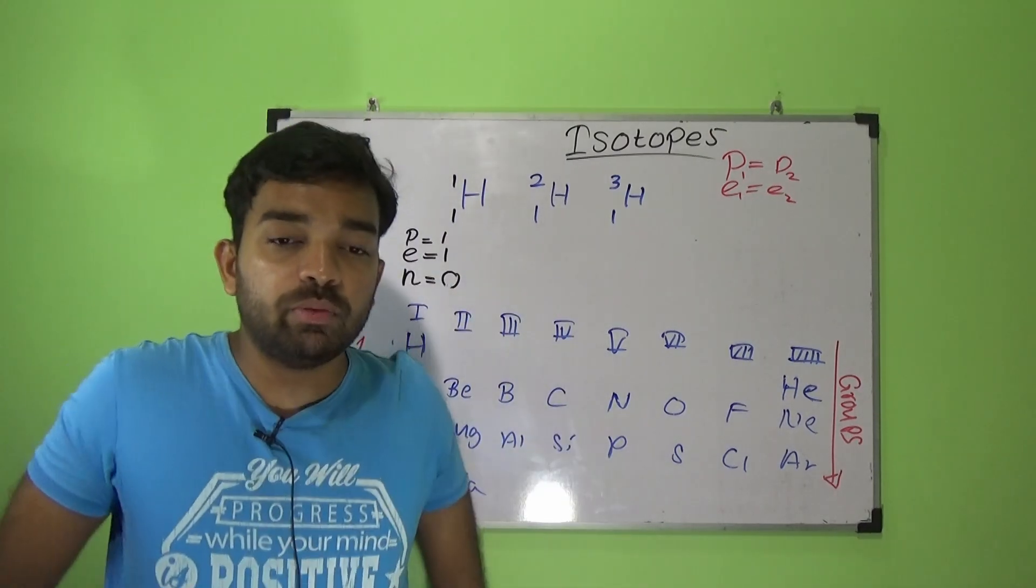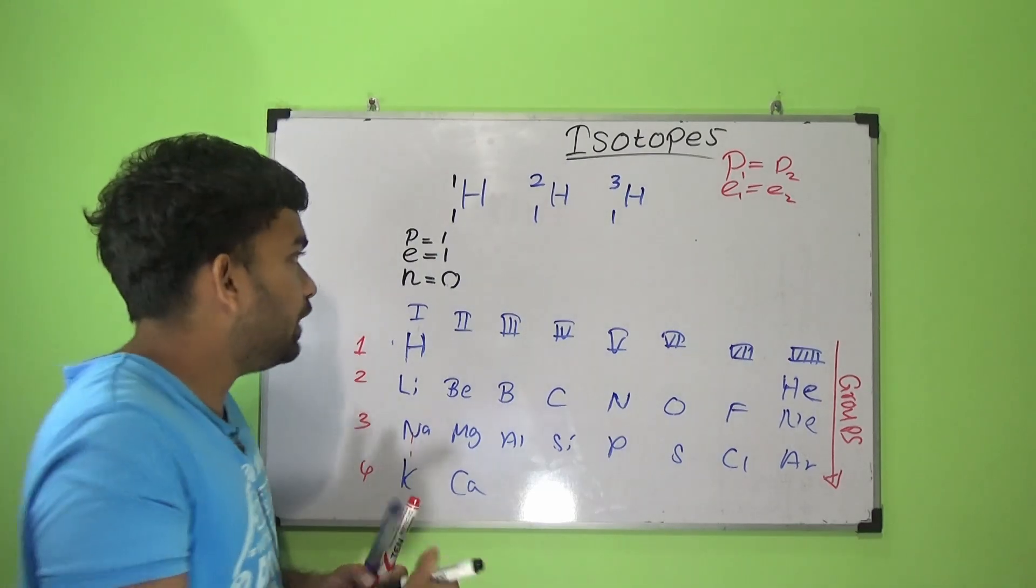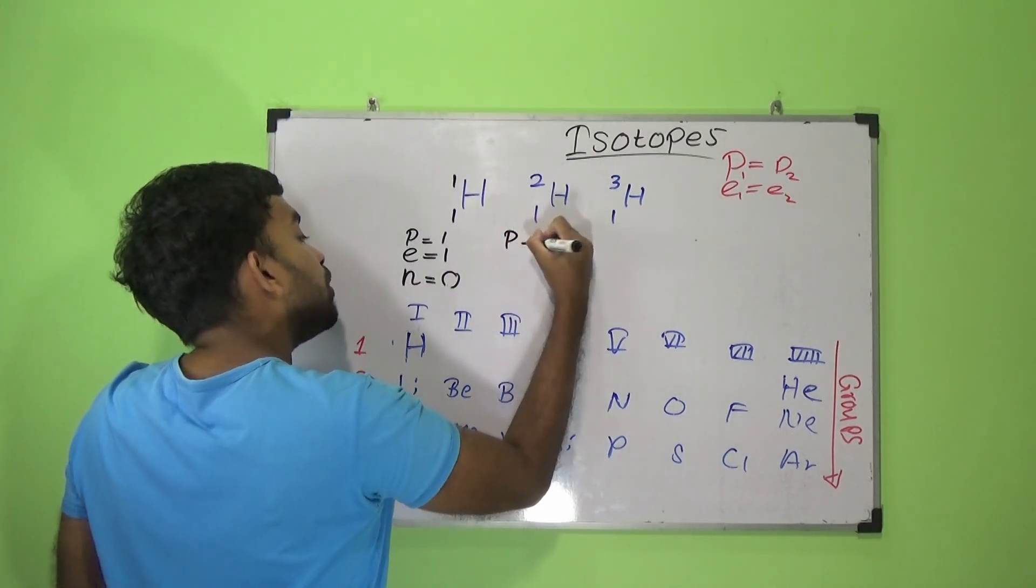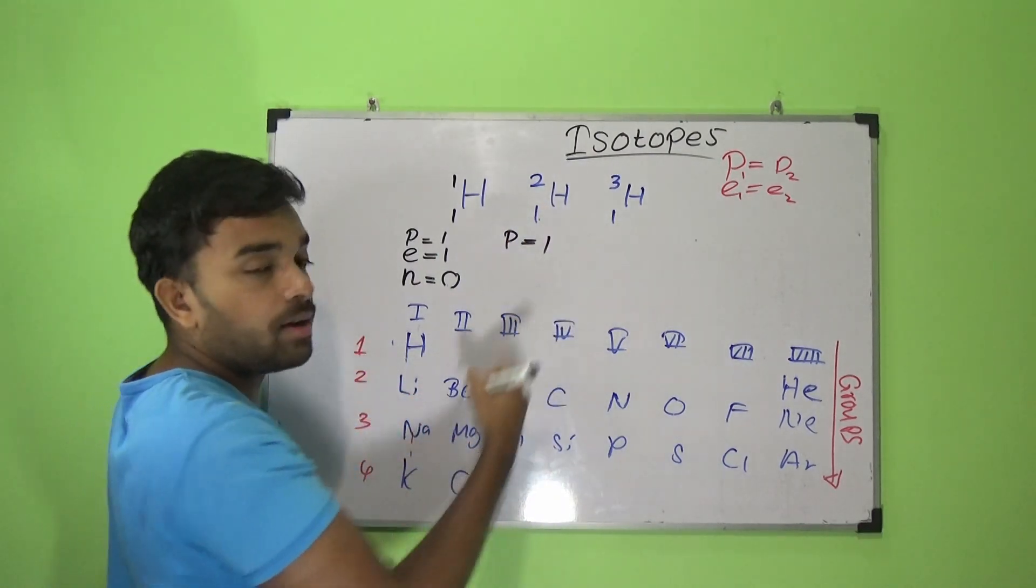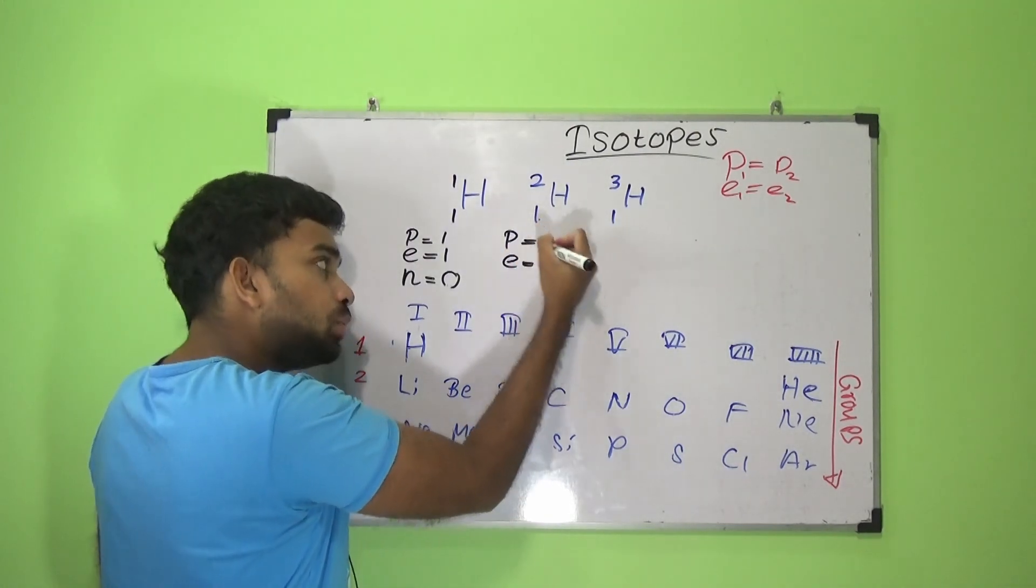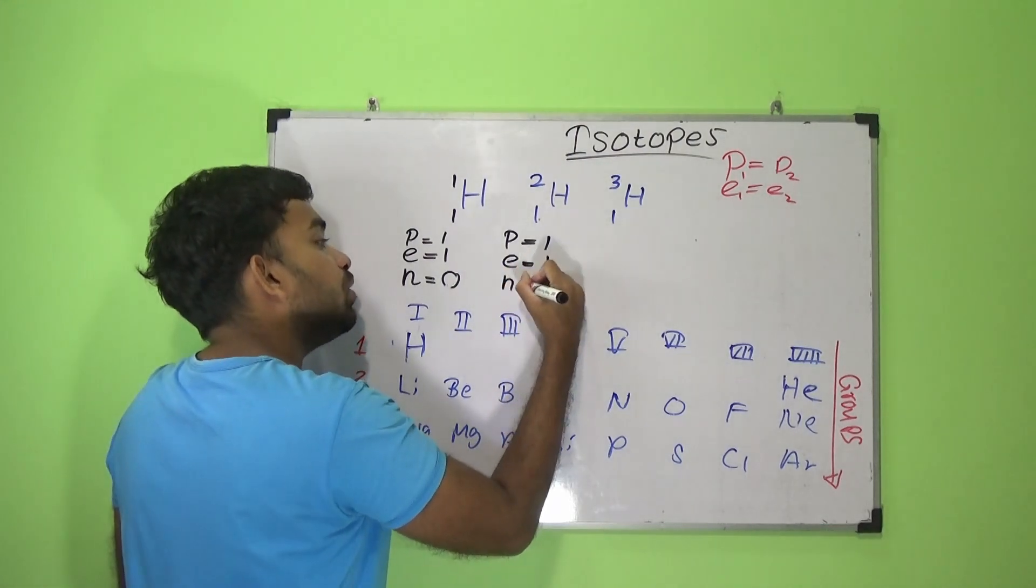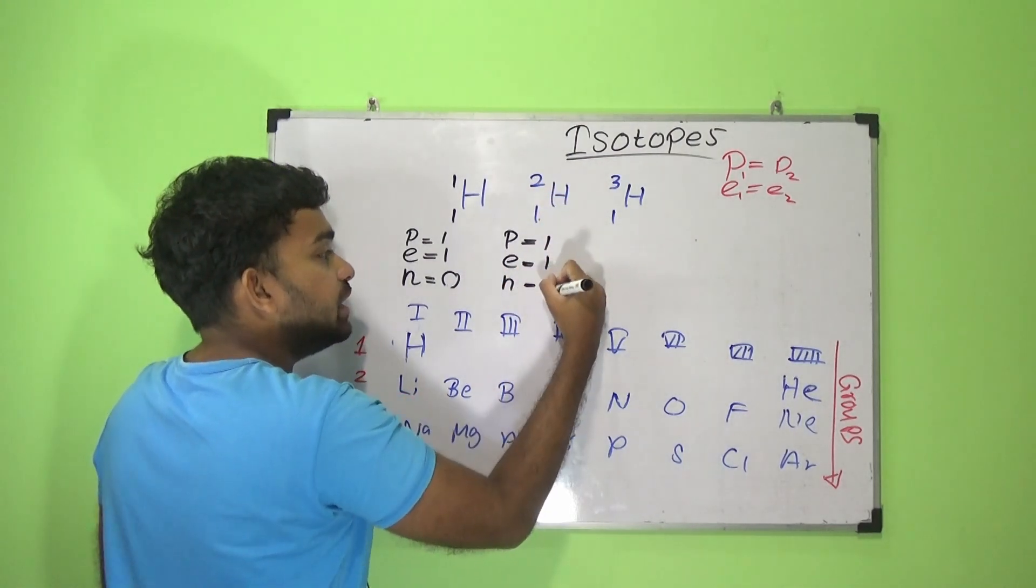So if you subtract these, you should get number of neutrons. 1 minus 1 equals to 0, so number of neutrons equals to 0. Second one: number of protons equals to 1, and number of electrons again equals to 1, but number of neutrons is 2 minus 1 which equals to 1.